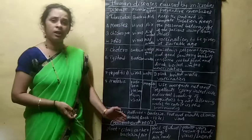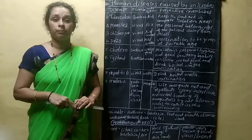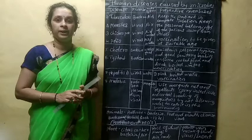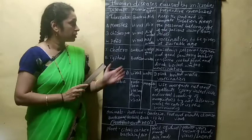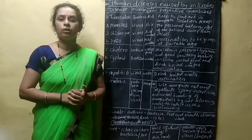You have to remember all these diseases — human diseases, plant diseases, and animal diseases caused by microorganisms. Because of all these harmful effects, microorganisms are considered as foe, meaning they are enemies to the environment. Sometimes they are harmful and sometimes they are useful, as we studied in the last class.